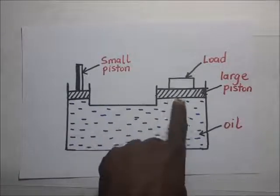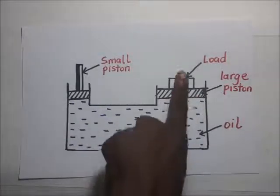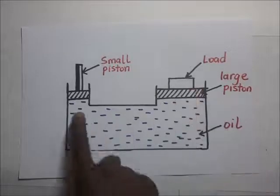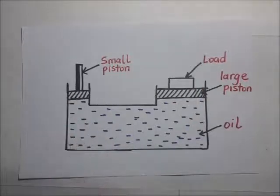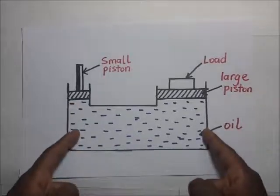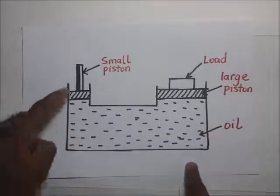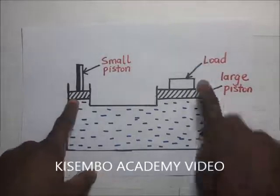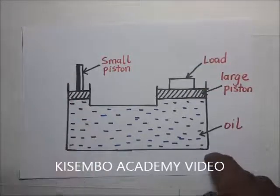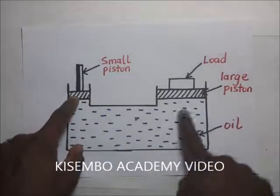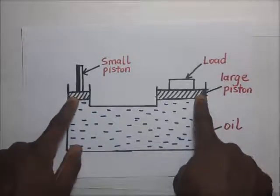This pressure causes the large piston to move upwards. When this piston moves up as a result of the force we applied, it means pressure has been transferred throughout this liquid equally. The pressure put on the small piston is the same as the pressure raising the large piston.